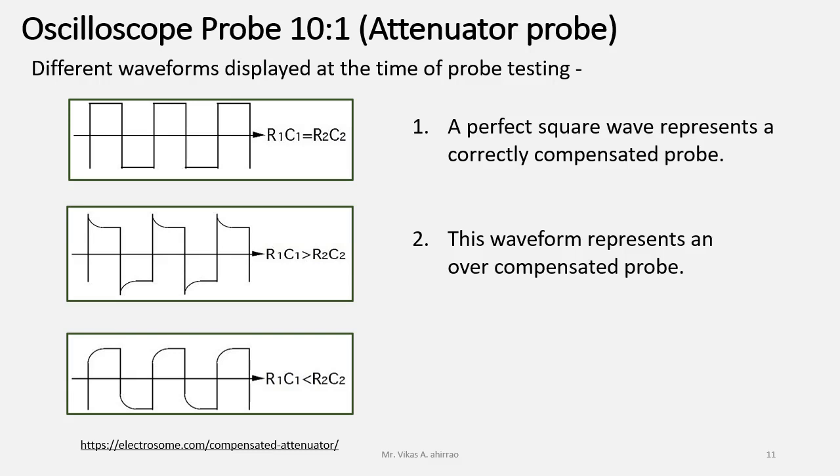The third one: here, instead of getting a sharp change, the signal voltage will change slowly up to the larger or positive peak. And in that case, R1 C1 is less than R2 C2. This waveform represents an under compensated probe.